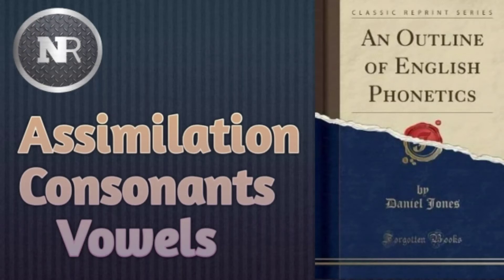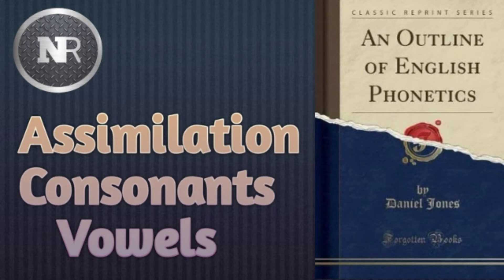Assalamualaikum warahmatullahi wabarakatuhu. This is the third micro video lecture on the topic of assimilation. The source shown on screen is a book entitled 'An Outline of English Phonetics' by Daniel Jones. Today we are going to discuss assimilation in terms of consonants and vowels. My name is Nihar Afridi and you are watching my YouTube channel Learning English with Afridi. Let's discuss our topic.